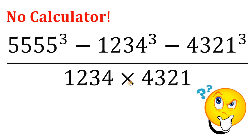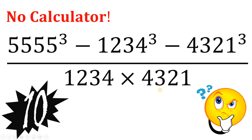Without using any calculator, simplify 5555 cubed minus 1234 cubed minus 4321 cubed, all over 1234 times 4321. You can pause this video if you want to give this problem a try.